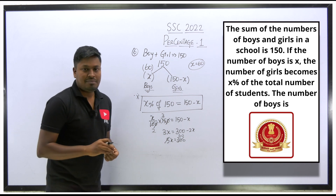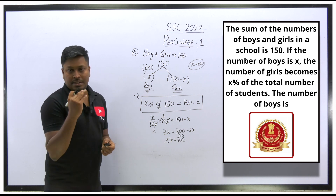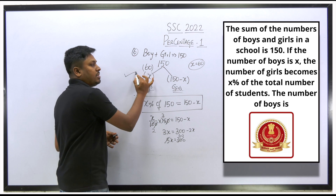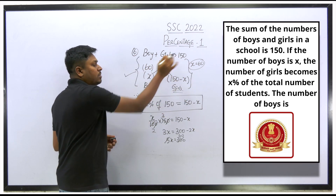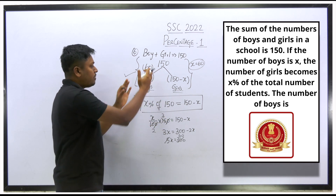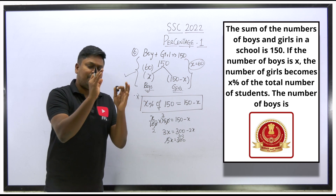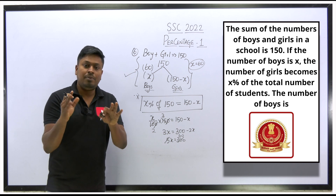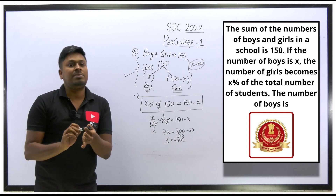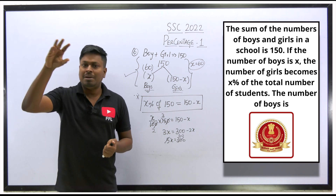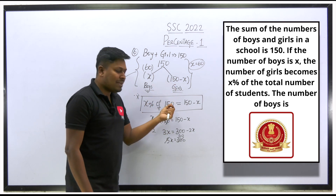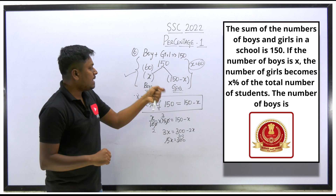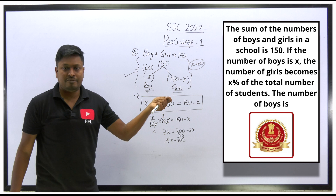Always remember: when you don't know how many boys or girls there are from a total, assume boys = x and girls = total − x. This technique makes solving the remaining steps straightforward. Answer: number of boys = 60.